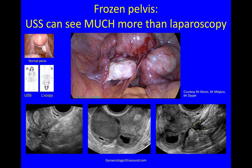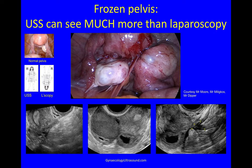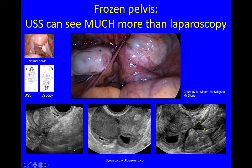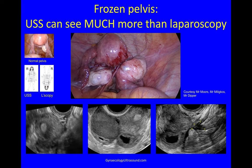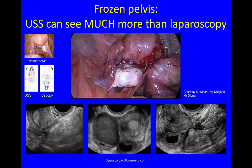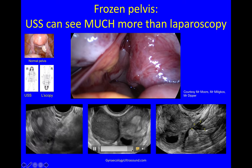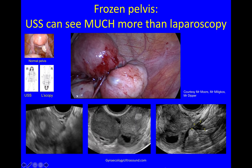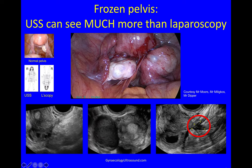With a frozen pelvis, ultrasound can see so much more than laparoscopy — remember at ultrasound and laparoscopy the images are the other way around. These are the ultrasound images of a patient with a frozen pelvis: in the transverse view you can see a big ovarian endometrioma and the other ovary — everything is glued to each other so they're kissing ovaries. But what you can also see that you would not know from laparoscopy alone is that she's got bowel endometriosis too.